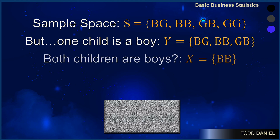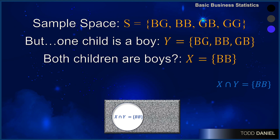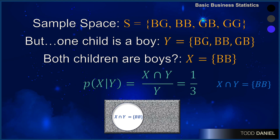The second part of this question is the probability that the other child is a boy, meaning the probability that both children are boys. There is only one outcome of the three in which we have two boys. Therefore, the probability of X given Y is the X-Y intersection divided by the probability of Y — one out of three possible outcomes.